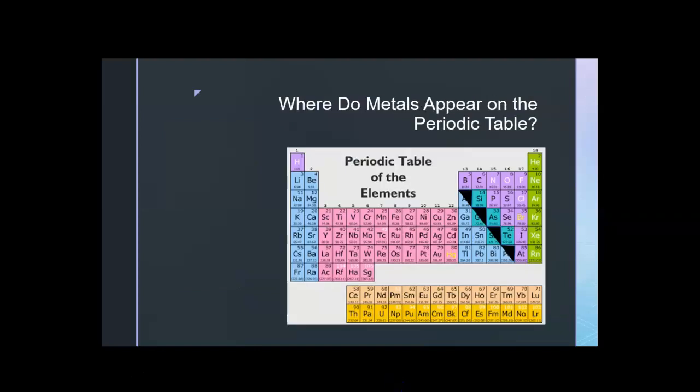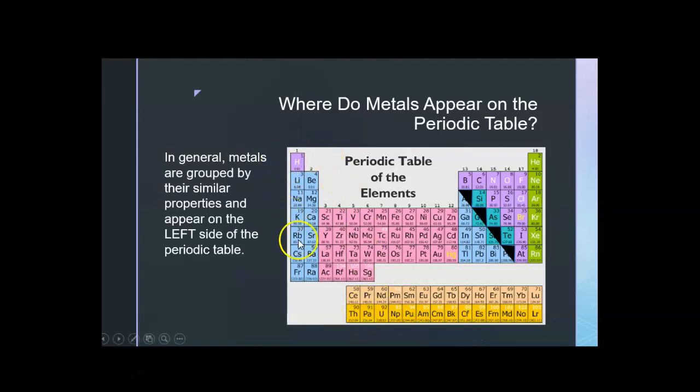Where do metals appear on the periodic table? This periodic table will help us see that. In general, metals are grouped by their similar properties and appear here on the left side of the periodic table. Moreover, all of these down here are metals as well. They actually go right in here with lanthanum and actinium. Metals are on the left.